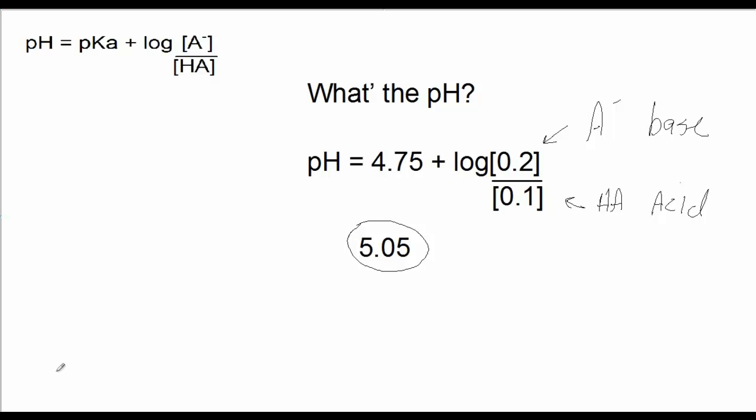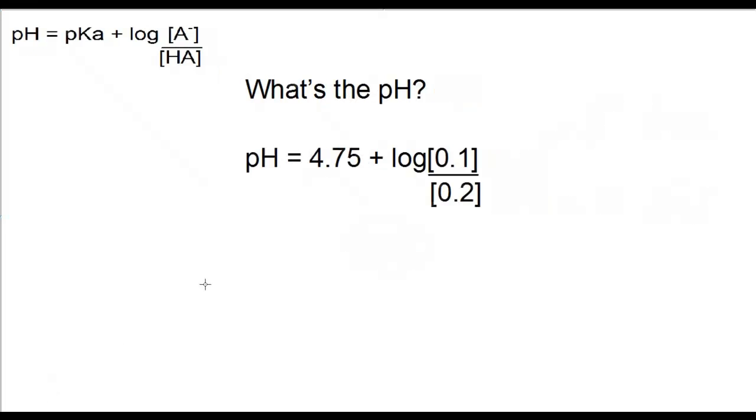I have a few problems I'd like you to try. Here's a problem. The same pKa, 4.75. In this case, we have 0.1 molar conjugate base and 0.2 molar weak acid. First, ask yourself, should that pH be greater or less than 4.75? And then go ahead and calculate it and see if it works out to be correct. Pause the video and give that a try.